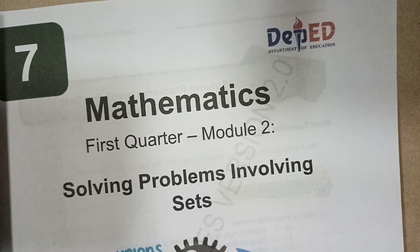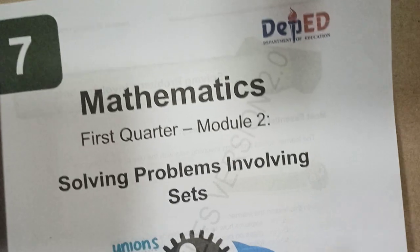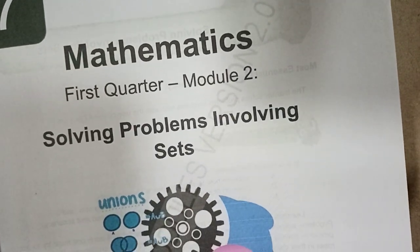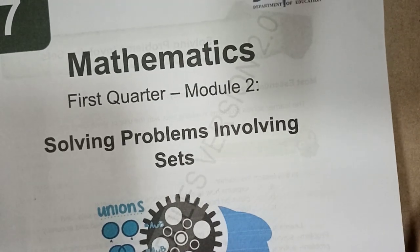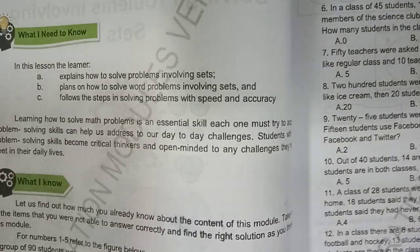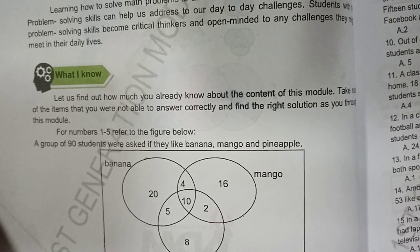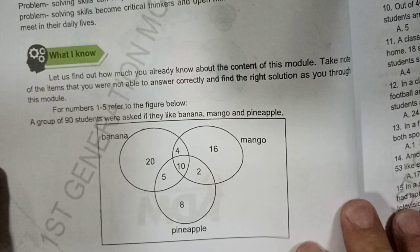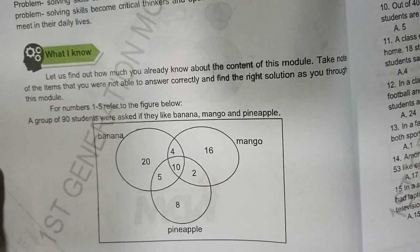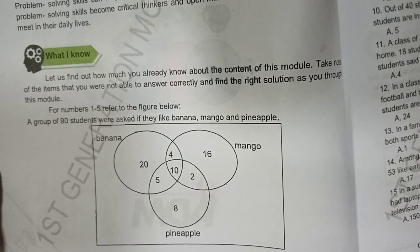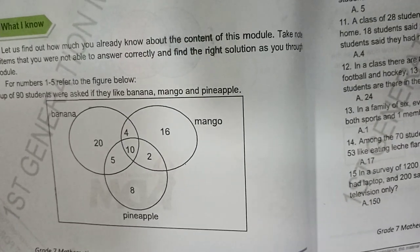We'll be answering Mathematics First Quarter Module 2 — solving problems involving sets. So let's proceed to the next page. There is a Venn diagram here and the problem is above. A group of 90 students were asked if they like banana, mango, and pineapple. This Venn diagram is our basis for our answers on the next page.